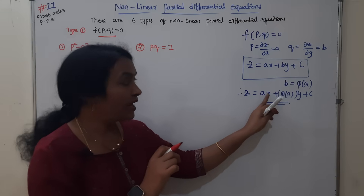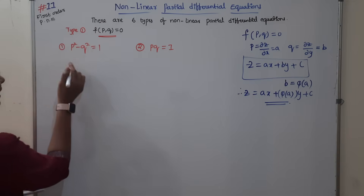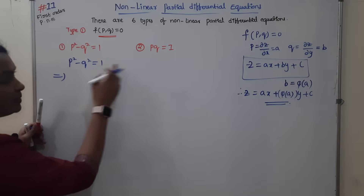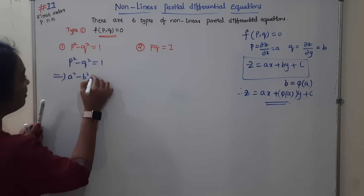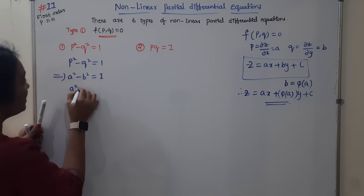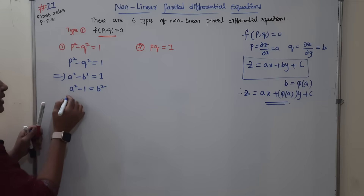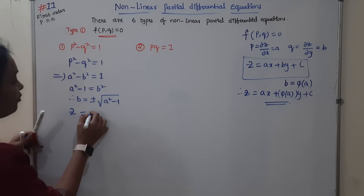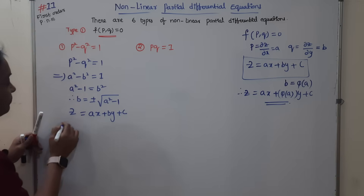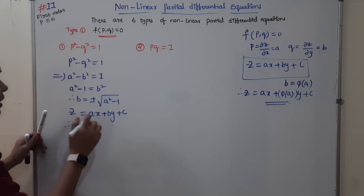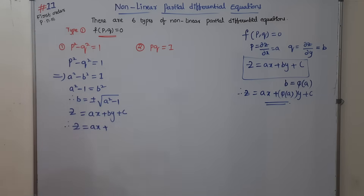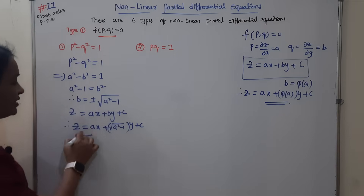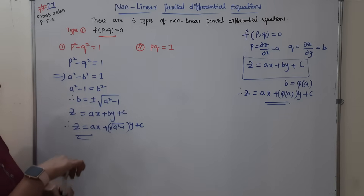Now the first equation: p² - q² = 1. We know p = ∂z/∂x = a, so a² - b² = 1. Therefore b² = a² - 1, and b = ±√(a² - 1). The solution is z = ax ± √(a² - 1)·y + c.